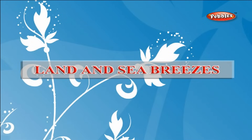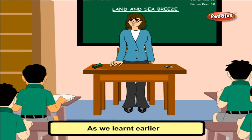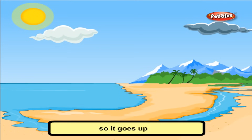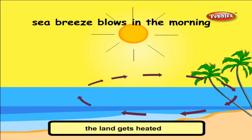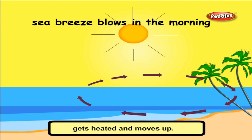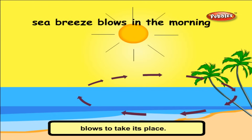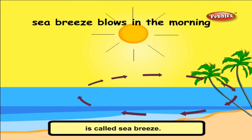Land and sea breezes. As we learnt earlier, hot air is lighter than cool air, so it goes up and the cool air rushes to fill the space. During the daytime, the land gets heated more than the water in the sea. The air on the land gets heated and moves up, and the cool air from the sea blows to take its place. This blow of air from sea towards land is called sea breeze.